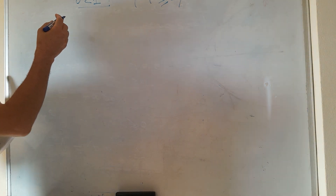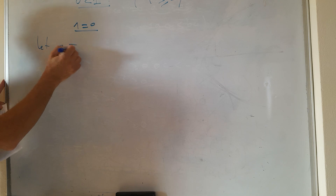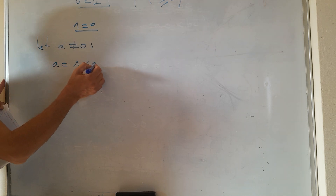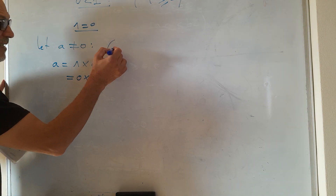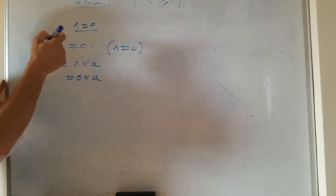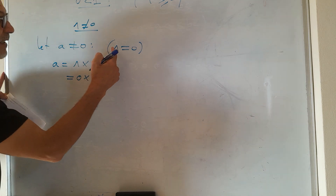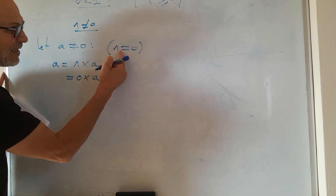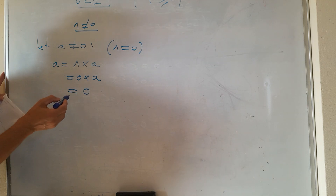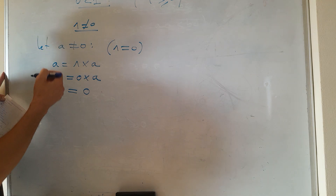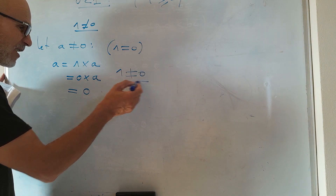Suppose 1 = 0 and let a be different from zero. Then a = 1 · a = 0 · a = 0. This is a contradiction, since a is different from zero. Therefore, 1 can never equal zero, and since 1 ≥ 0, we conclude 1 > 0.